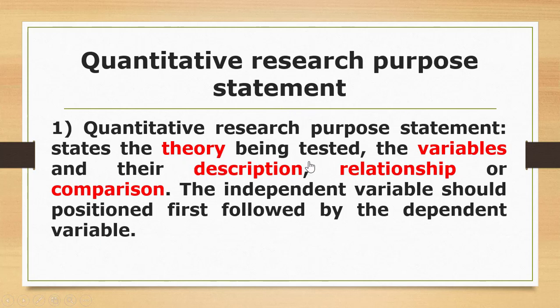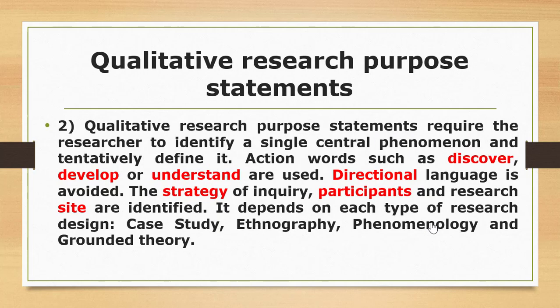In the quantitative research purpose statement, the researcher states the theory being tested and describes the variables — their relationship or comparison. The independent variable should be positioned first, followed by the dependent variable.